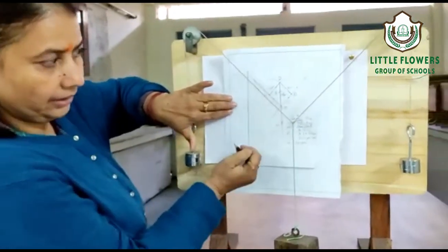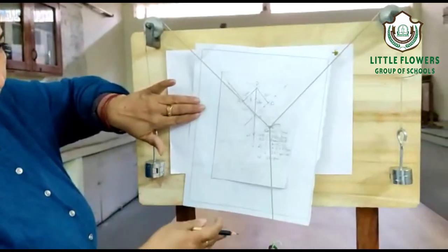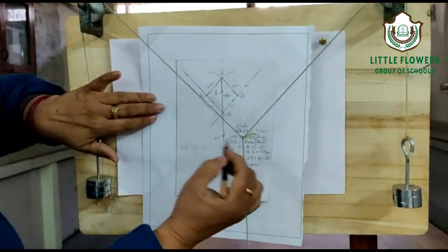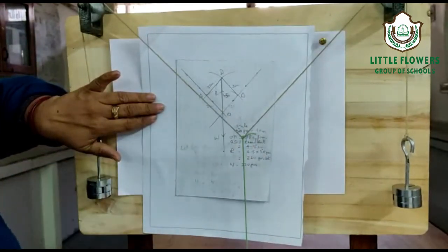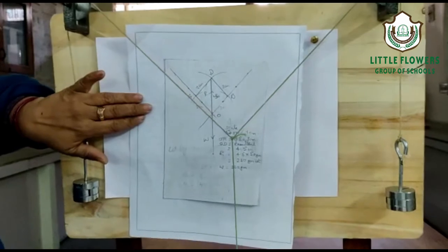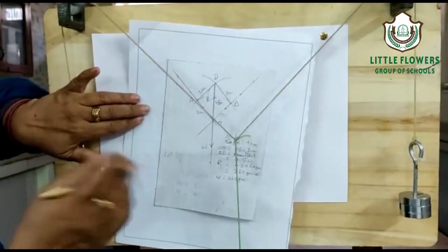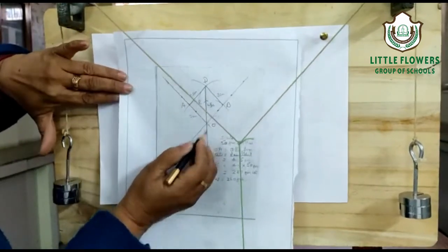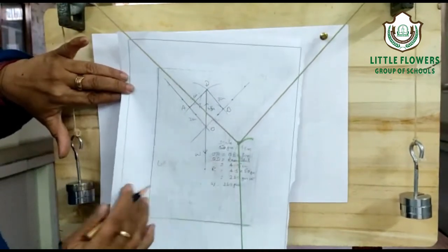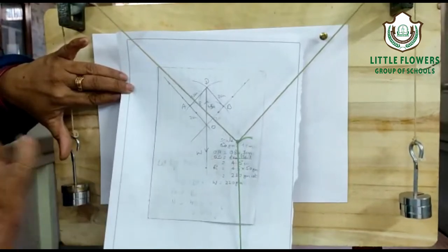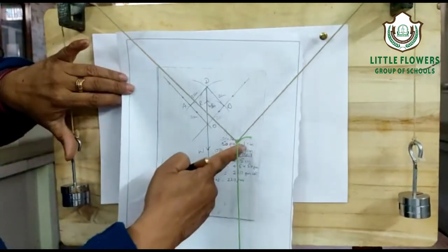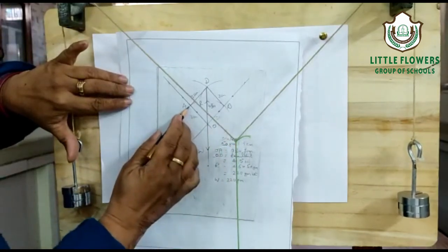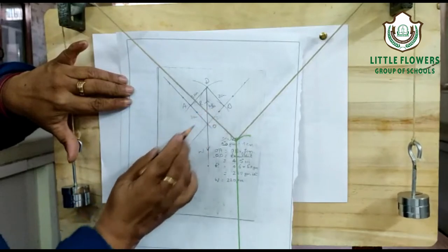After getting the points from the mirror, by using the known weight, let us assume the scale. We assume in the scale each weight of 50 grams is equal to 1 centimeter. With the help of the compass, we mark an arc of 3 centimeters as we are having a 150 gram weight and each 50 grams equals 1 centimeter. So 150 becomes 3 centimeters. We mark the arc of 3 centimeters and get points A and B.